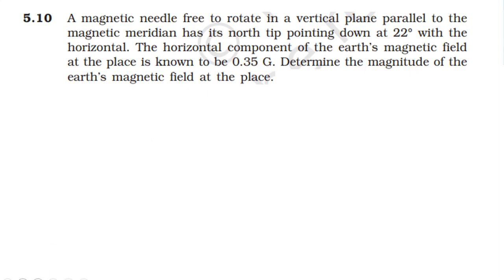This is the horizontal direction, this is the vertical direction, and this is the resultant magnetic field. The resultant magnetic field makes an angle theta with the horizontal, where theta is 22 degrees. The horizontal component of the magnetic field is 0.35 gauss.